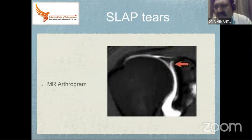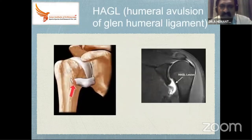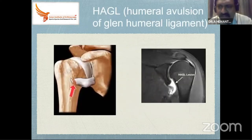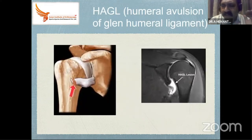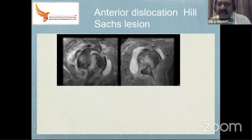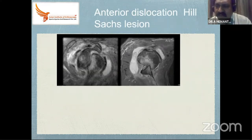The HAGL lesion — humeral avulsion of the glenohumeral ligament — is one of the rarest things we see. Clinical tests have been described by Dr. Babulkar. It is important because when we repair the labrum there is a chance of failure if the HAGL lesion is missed. The Hill-Sachs lesion occurs when the posterior humeral head rotates and locks on the anterior glenoid — the humeral head is indented posteriorly. Both Bankart and Hill-Sachs are essential lesions for shoulder instability.